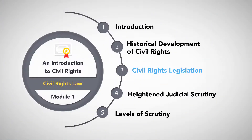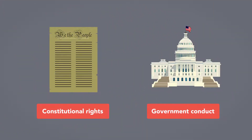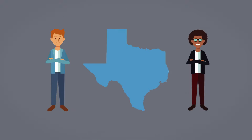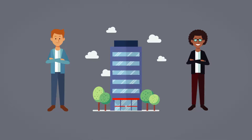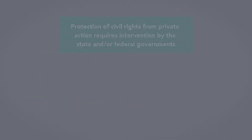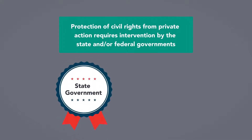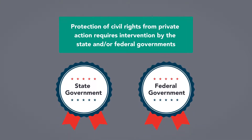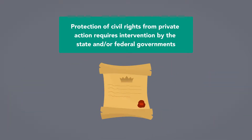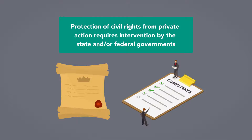Civil Rights Legislation. Constitutional rights typically only apply to government conduct. While states, for example, may not treat people unequally based on race, nothing in the Constitution prevents restaurants, hotels, or employers from discrimination based on race. Protection of civil rights from private action requires intervention by state and/or federal governments, typically in the form of legislation and administrative enforcement.